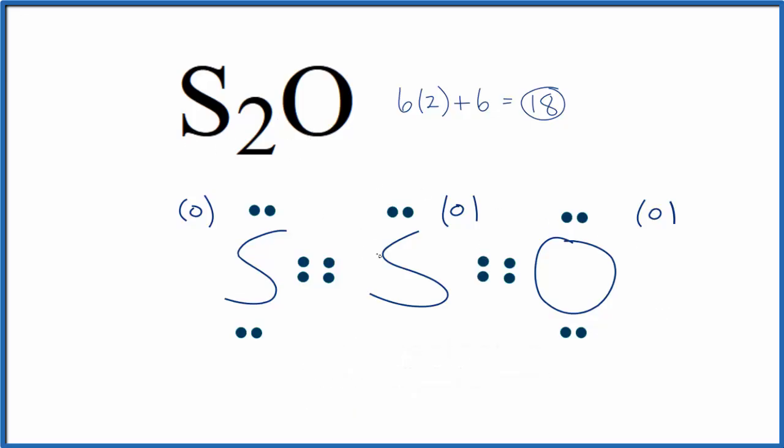So we had those two other resonance structures where we had a single bond here or a single bond here, but our formal charges weren't zero like we have here.